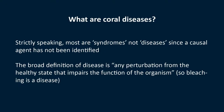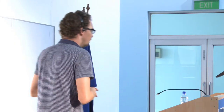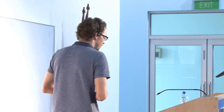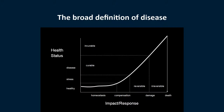The broad definition of a disease is any perturbation from a healthy state that impairs the function of an organism. So if you take that into account, then we can class bleaching as disease, because it is a change of cause and effect from the norm. If we look at a broader definition of disease, we can actually categorize a disease into a variety of different areas.